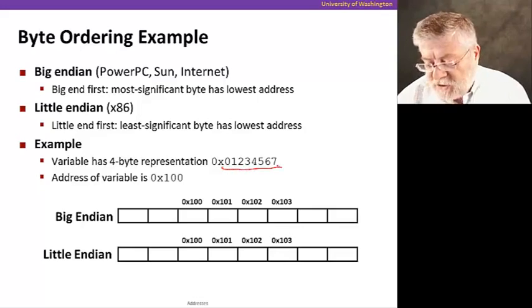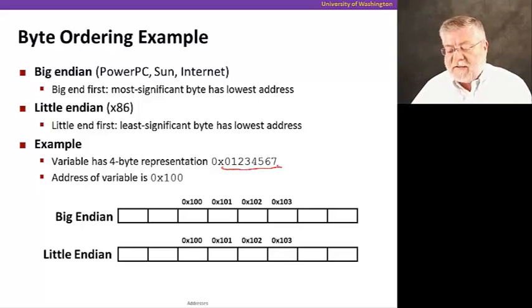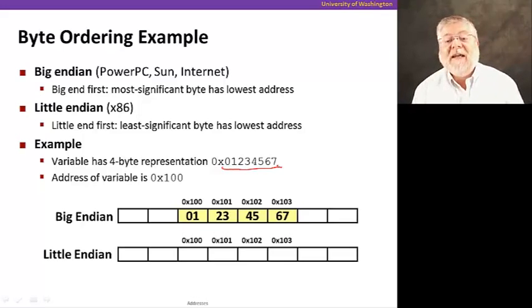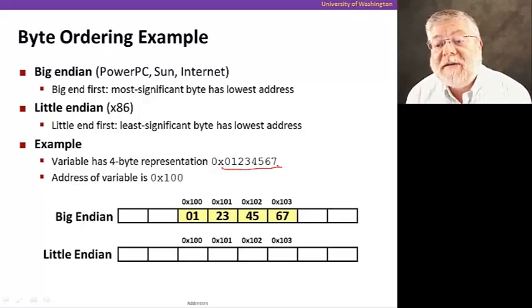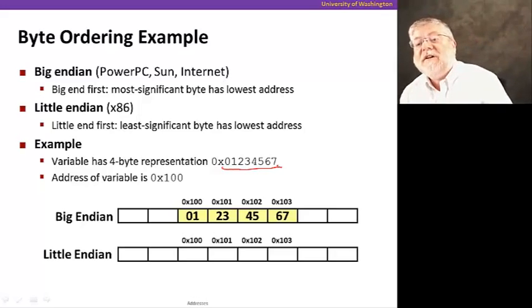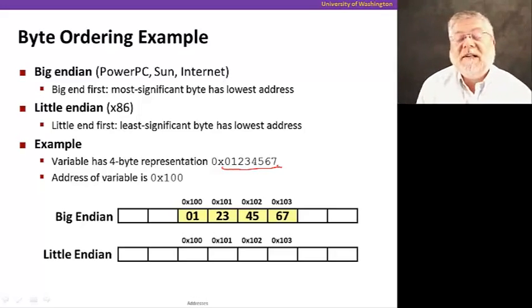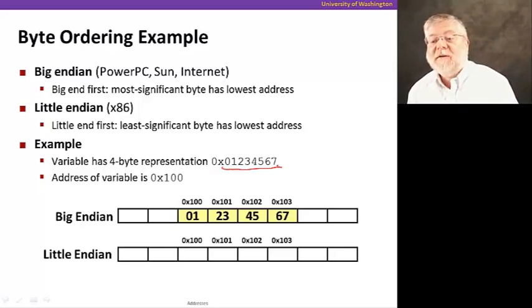Suppose I have the following eight-digit hexadecimal number: 0x01234567. And I want to store that at a word at address 0x0100. Now, in a Big Endian computer system, it would be stored as follows. The most significant byte - in other words, the highest order digits - go to the first byte. Then the next two go to the next byte, and so on, until the lowest significant digits go in the last one at 0x0103.